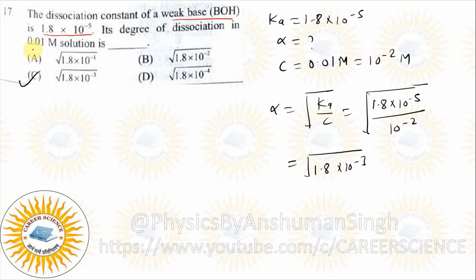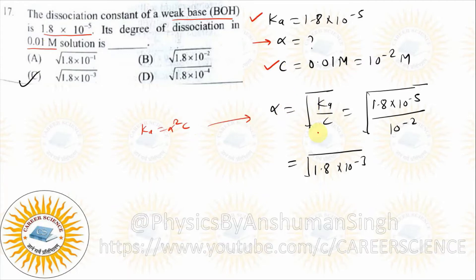The dissociation constant of a weak base — degree of dissociation of a 0.01 molar solution. So Ka = C·alpha², and alpha = sqrt(Ka/C). You will see Ostwald's dilution law formula applied here. This is very simple — you have to solve the root.